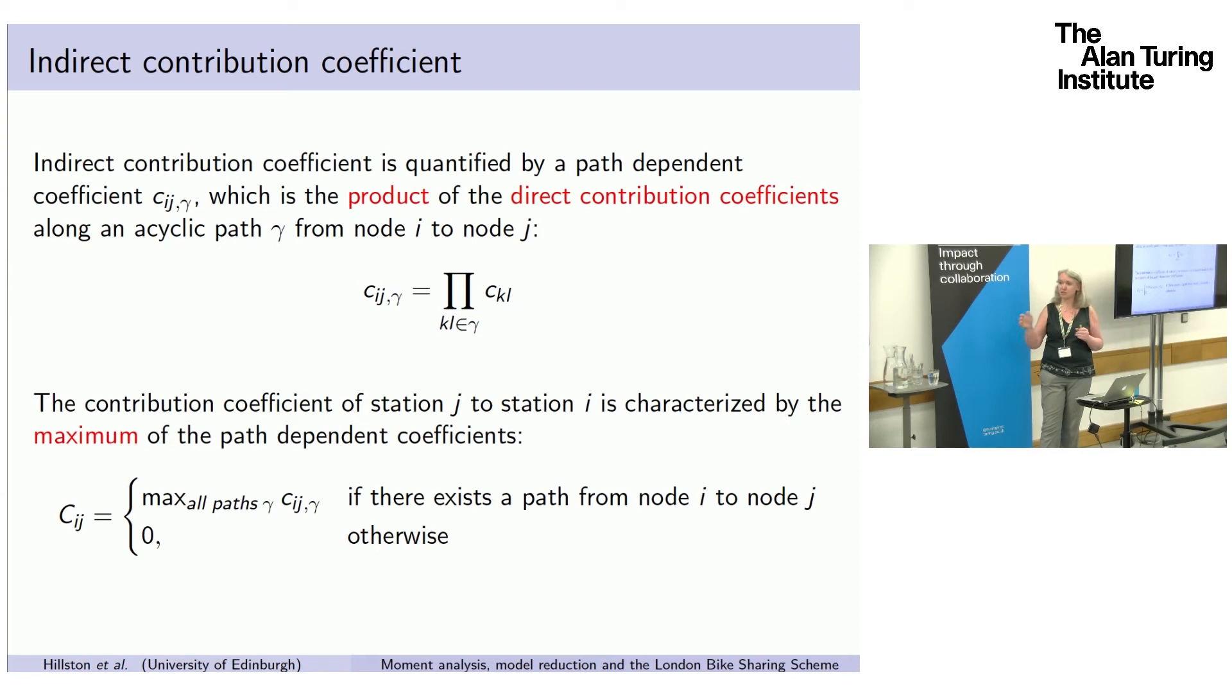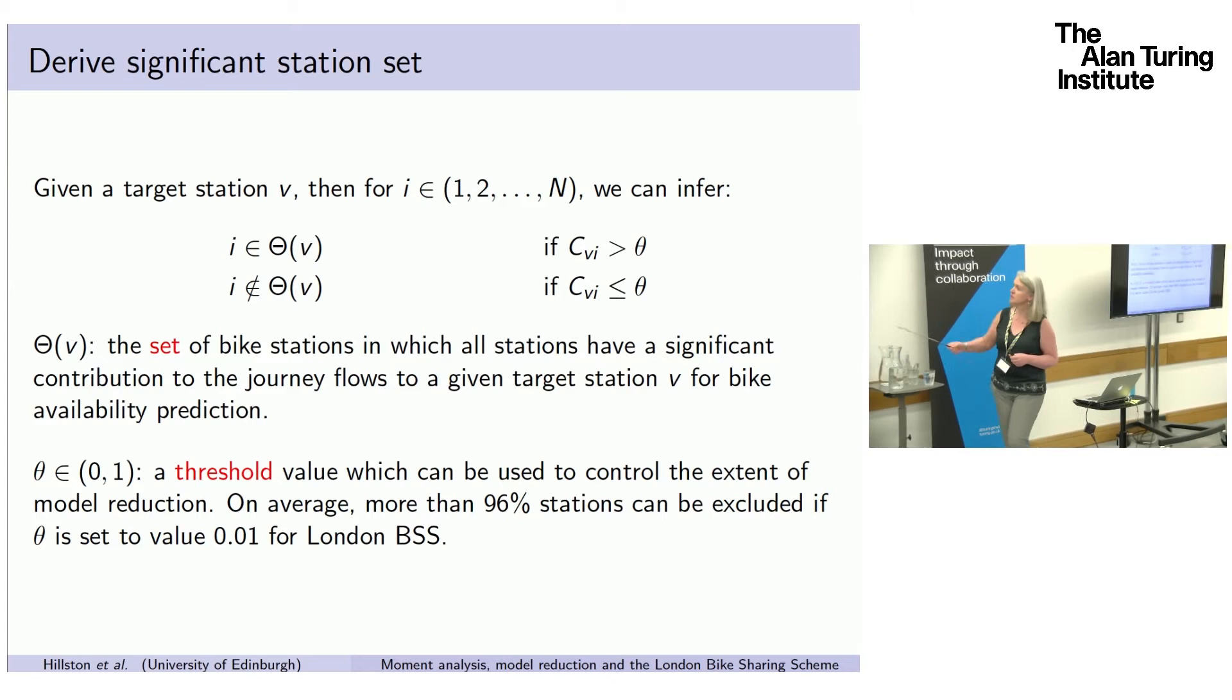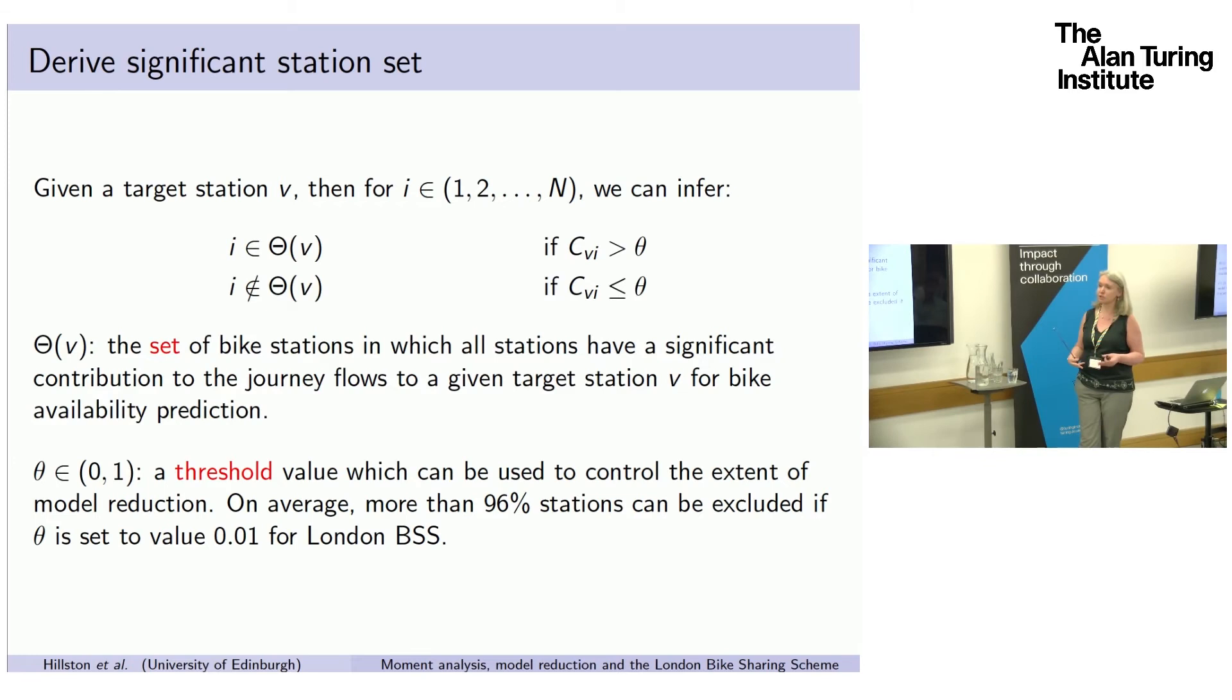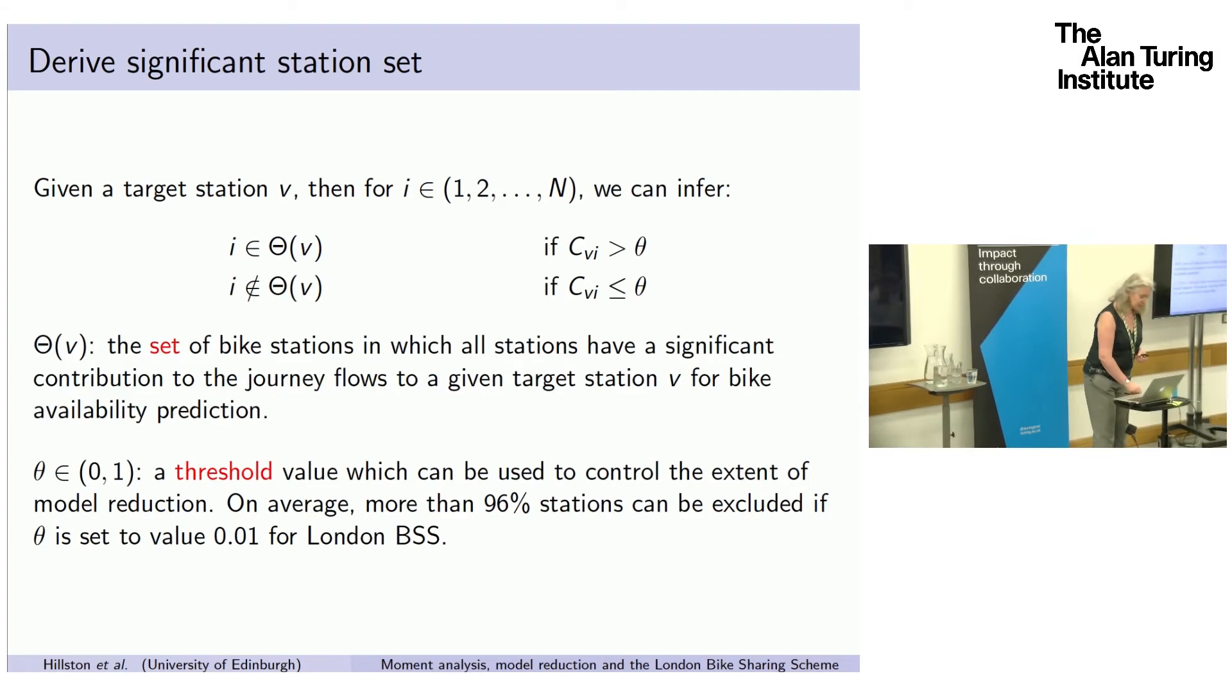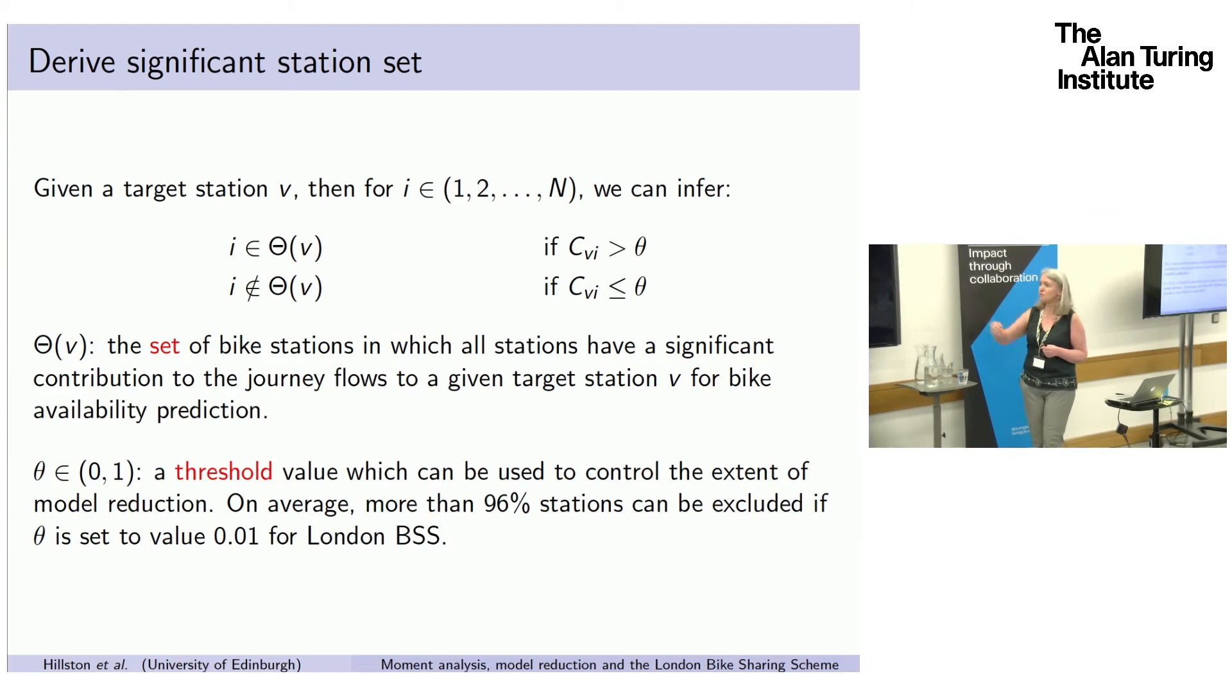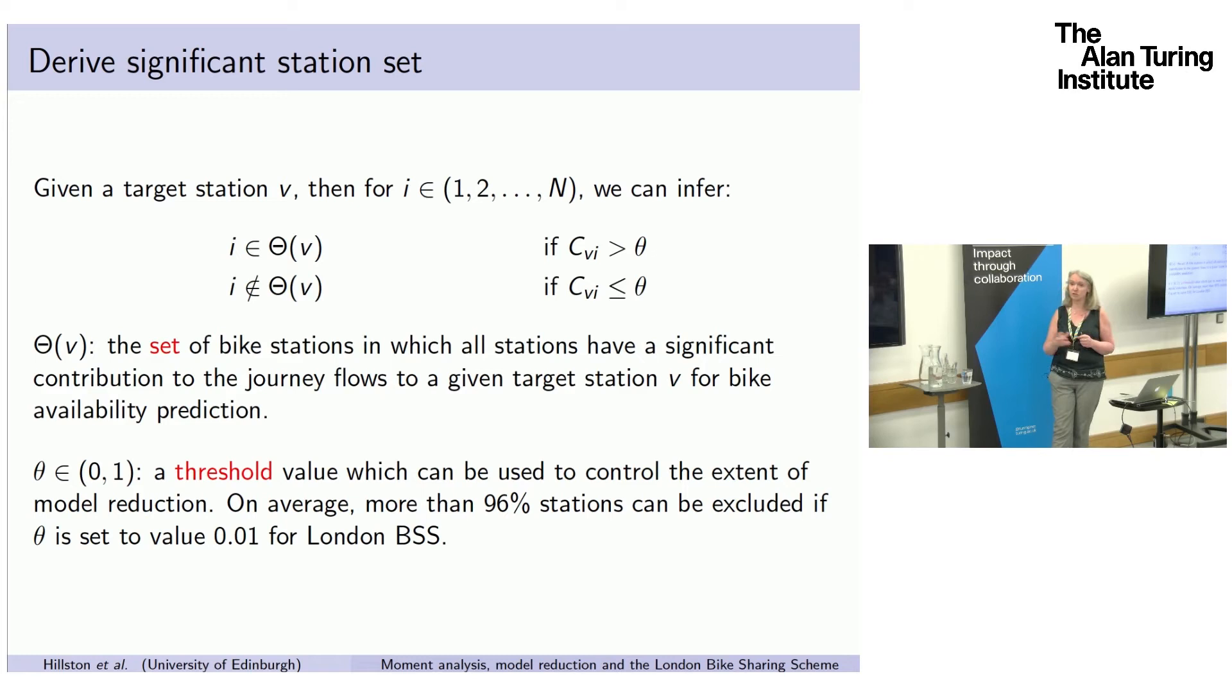Then what we do is we set a threshold value theta. So we choose this value theta and we then can choose, this will define for us a set of stations which are seen to have a significant impact on the one I'm interested in and then a set of stations where it's not. This value is between zero and one. As we'll see later, what we find is setting the value between 0.01, 0.02 and 0.03 doesn't make an awful lot of difference. So we might as well go down to 0.01. This eliminates in general 96% of the stations. Which 96% will vary according to which station we're currently focused on, but we get a much smaller graph. When I show you the timings later, this involves building the graph and choosing the particular ones to include as well as the subsequent steps.